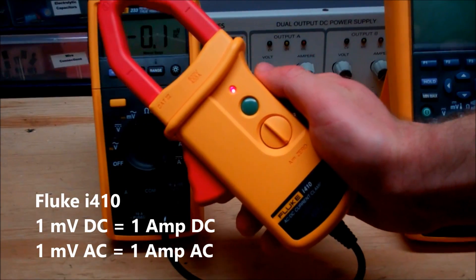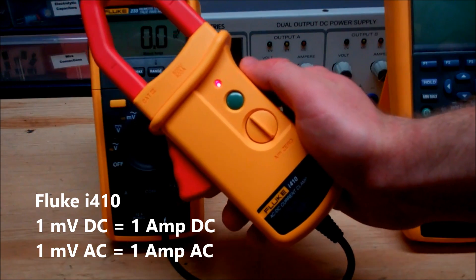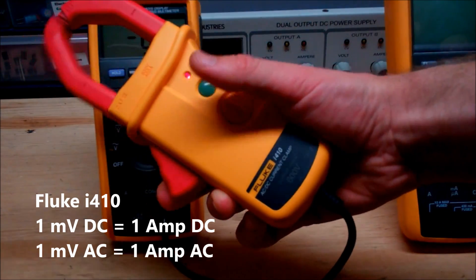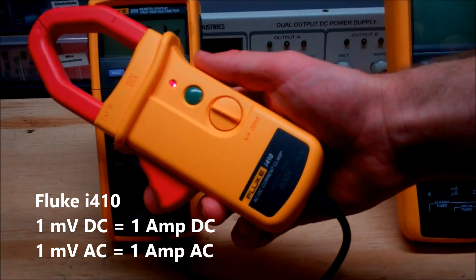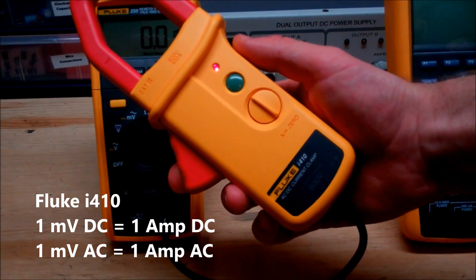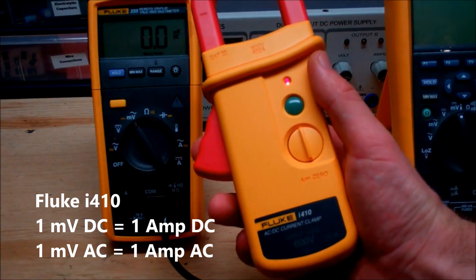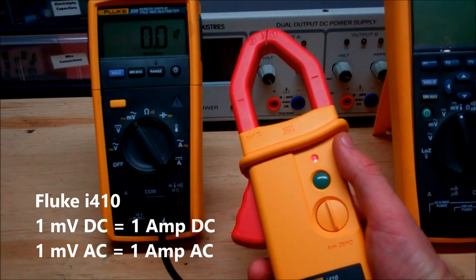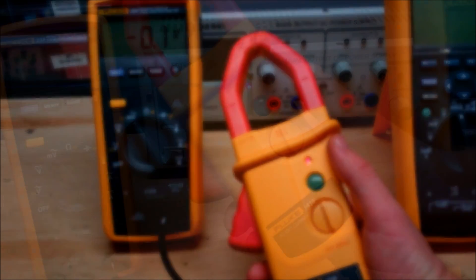Now this unit doesn't give direct current readings, it gives you interpretation. When you throw this onto the circuit it will give you a proportional signal in millivolts and you just have to know the ratio. In the Fluke i410 we have a ratio of 1 to 1, so 1 millivolt equals 1 amp for both DC and AC measurements.